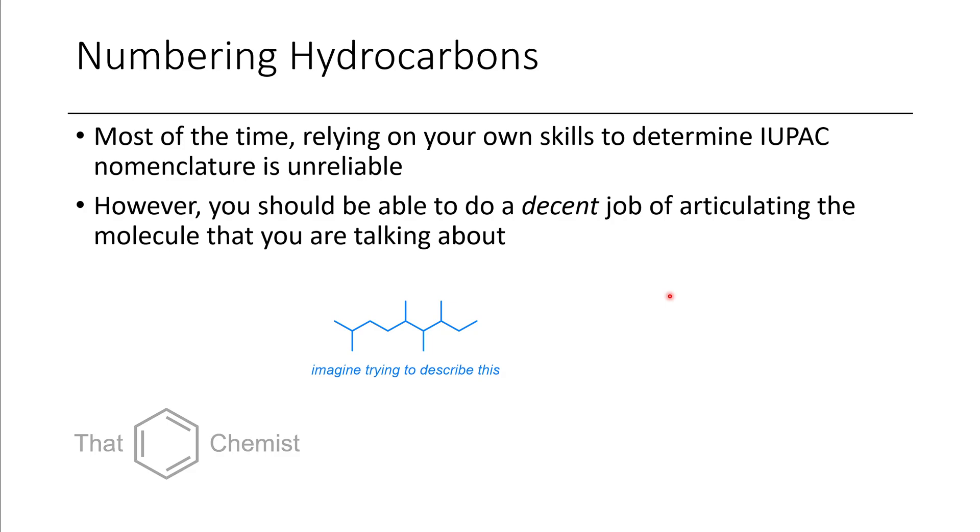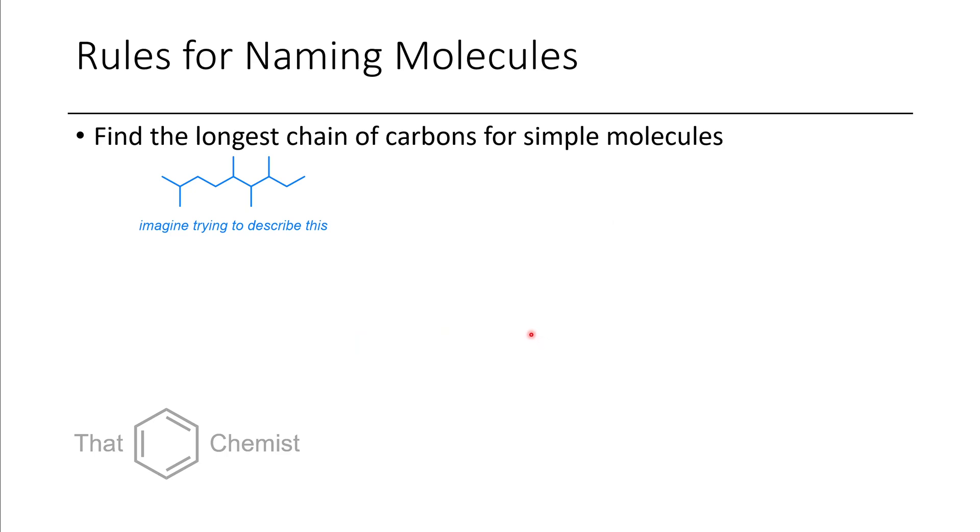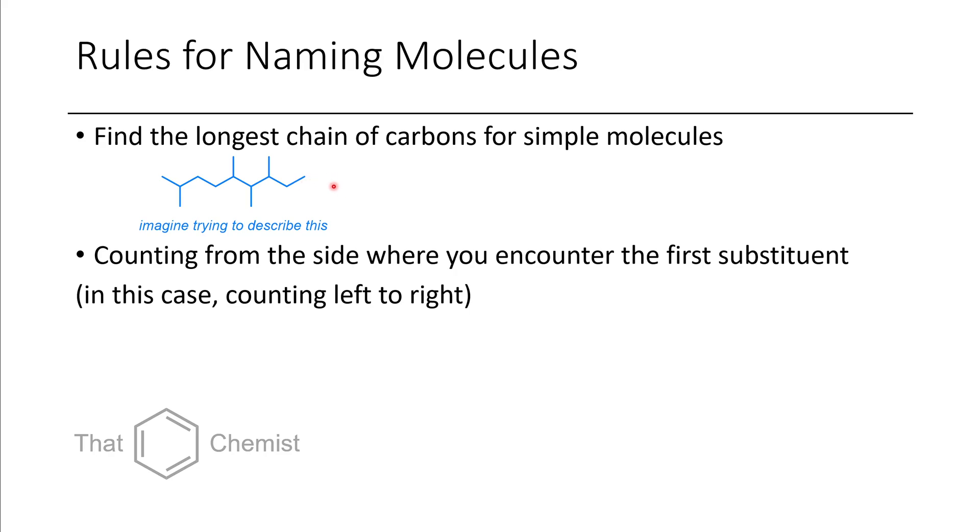Imagine we have this alkane here. What are you going to call that? Just trying to describe that with functional groups, it's too challenging. So the first thing that we do is we try and identify the longest chain of carbons. You might have to take a couple guesses to pick the longest one, but sooner or later you'll identify the longest chain.